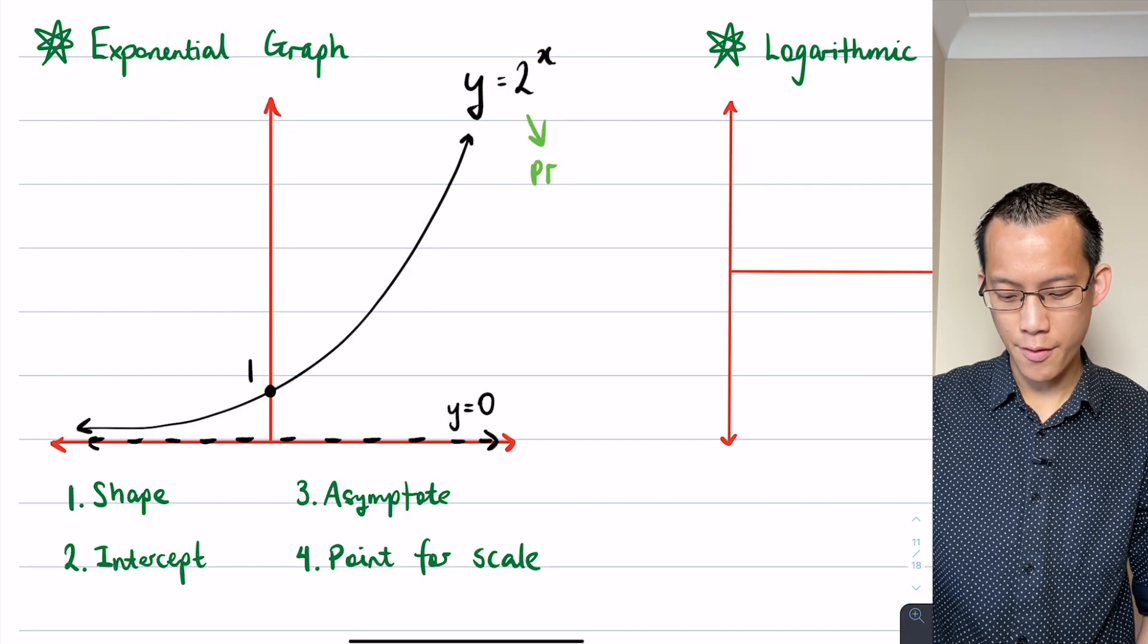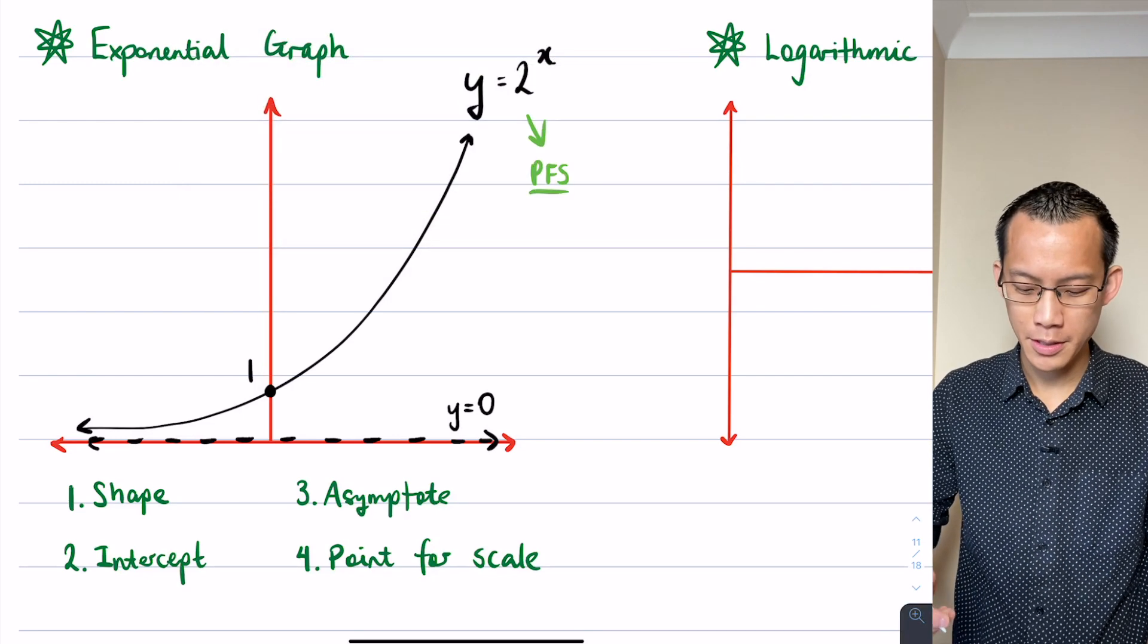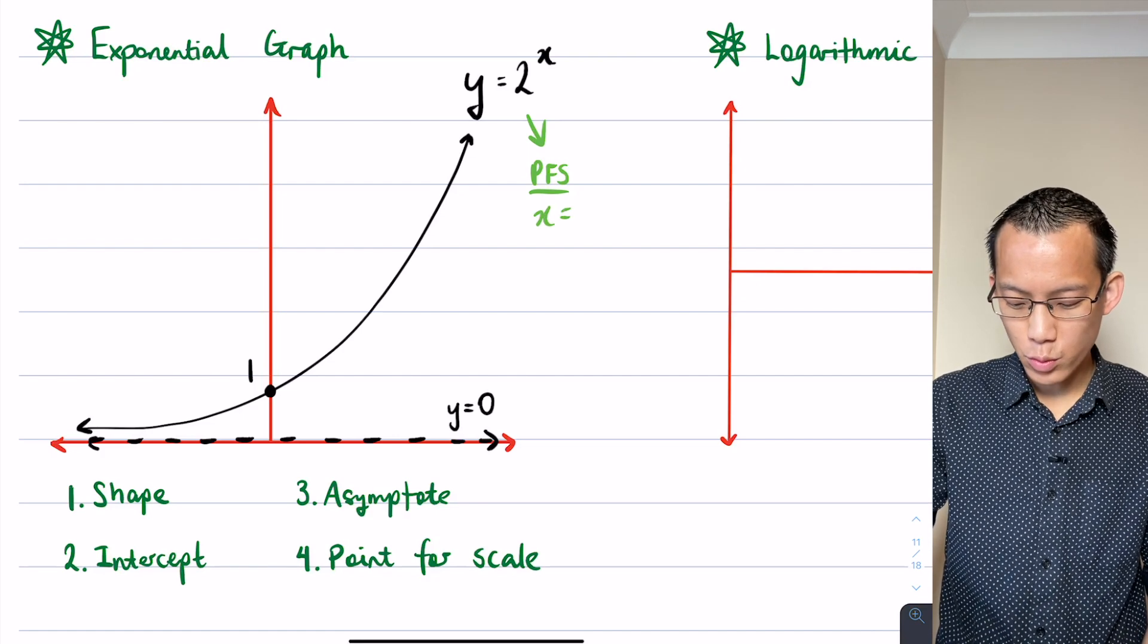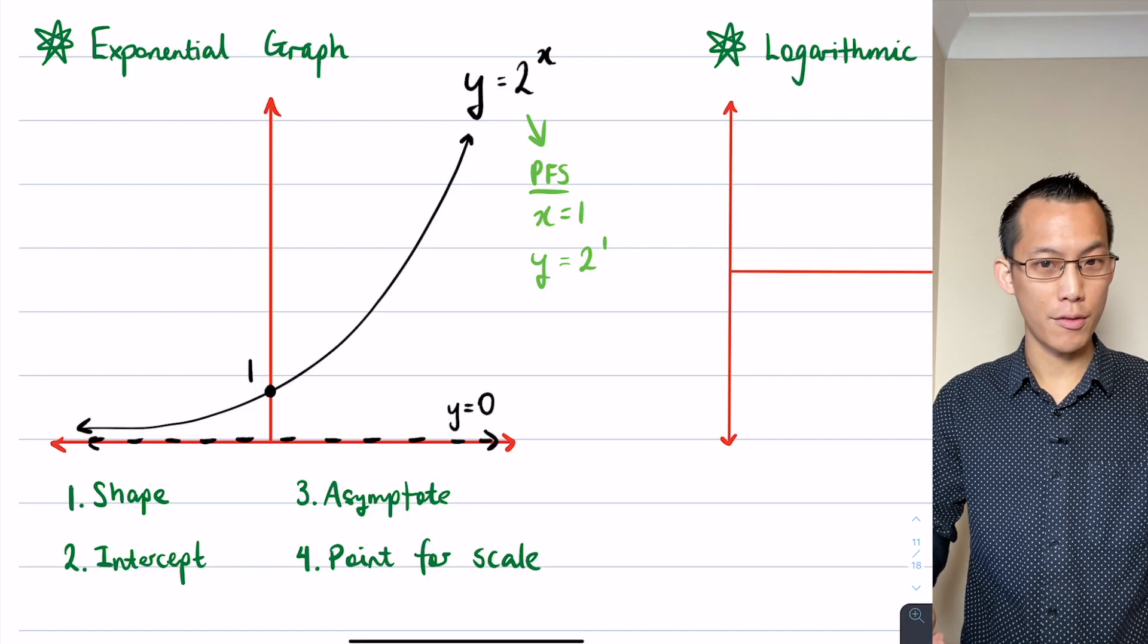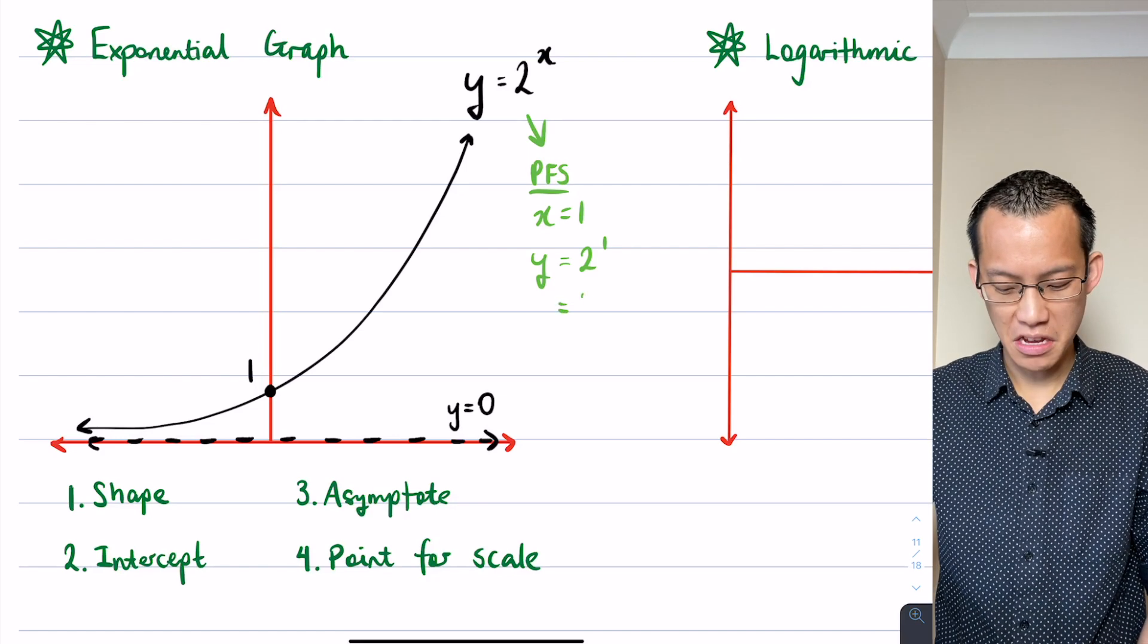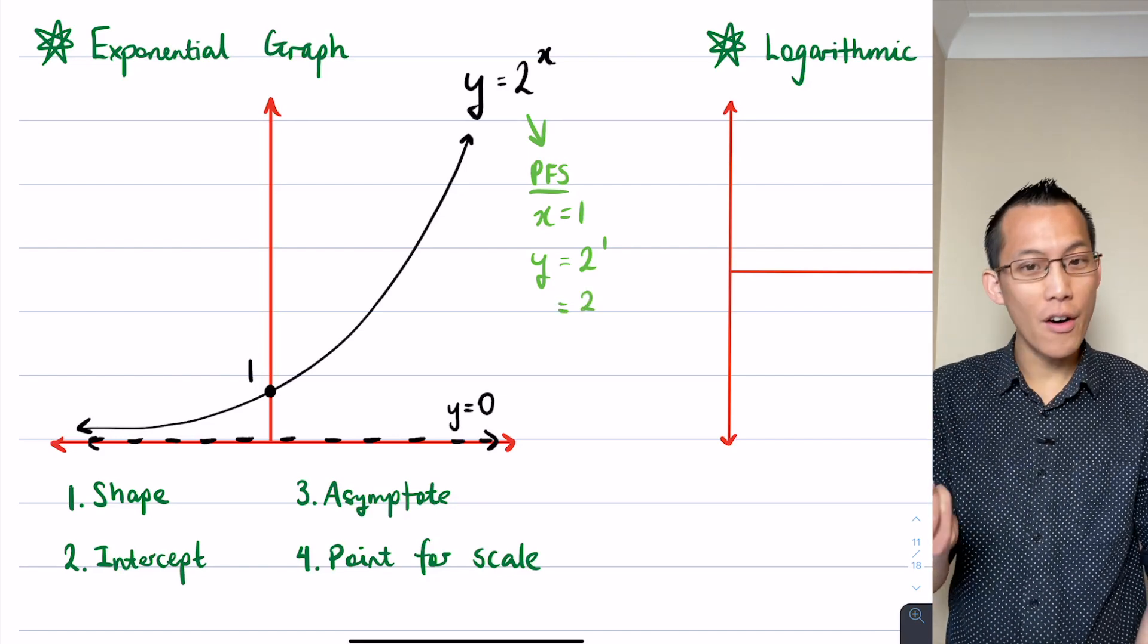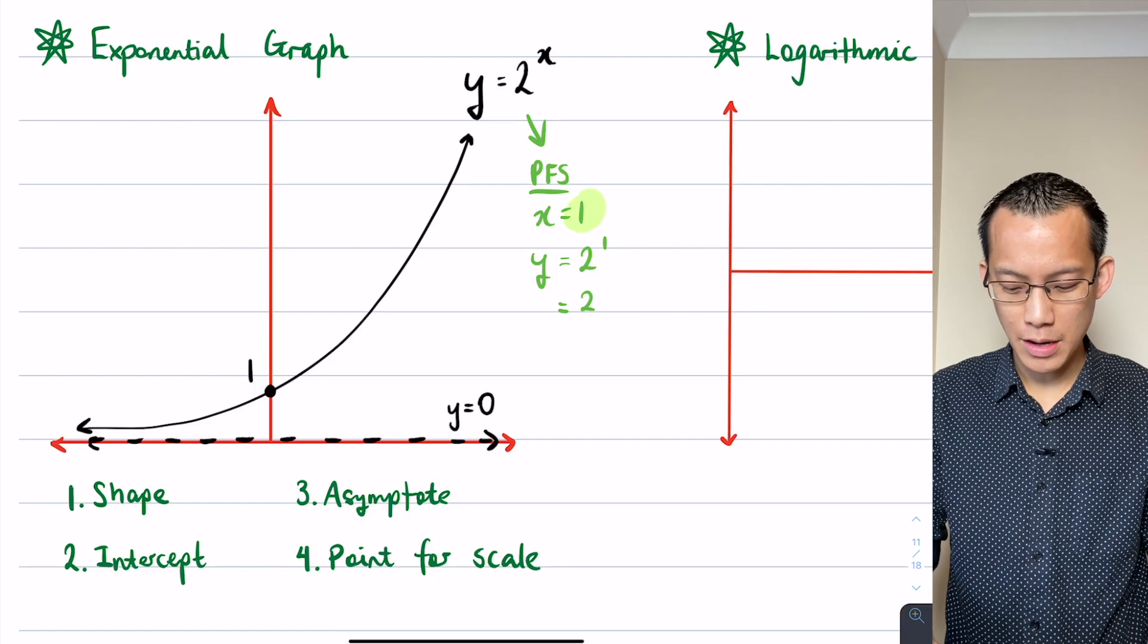Let me write PFS so I can show what my working is. I'm going to try x equals 1, which means y equals 2 to the power of 1, which is just equal to 2. So now I have a set of coordinates: 1 comma 2.